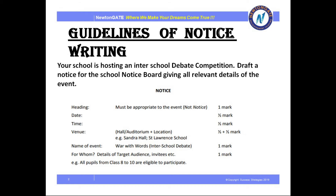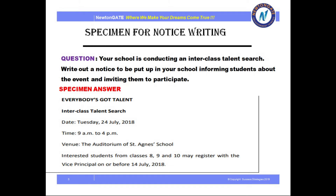For your convenience I have given one example: we can write 'all students from class 8 to 10 are eligible to participate.' Let's follow one specimen for notice writing. Suppose the question is: your school is conducting an inter-class talent search — write a notice to be put up in your school informing students about the event and inviting them to participate. According to the rule, I have given the heading 'Everybody's Got Talent,' followed by the name of the event 'Inter-Class Talent Search,' then the date and time, then the venue, then the body part — all following this format.